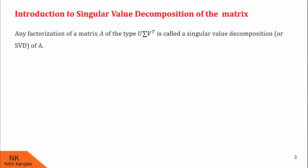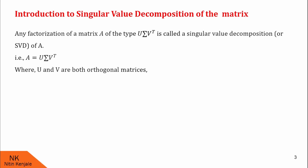Any factorization of the matrix A of the type U into sigma into V transpose is called singular value decomposition, or SVD of A. That is, any matrix A when written as U into sigma into V transpose, this factorization is called the singular value decomposition of matrix A. Note that here U and V are both orthogonal matrices. That means they satisfy the condition U into U transpose equals identity and V into V transpose equals identity.